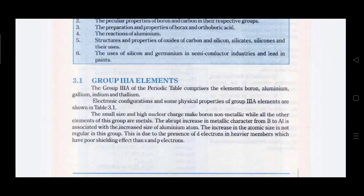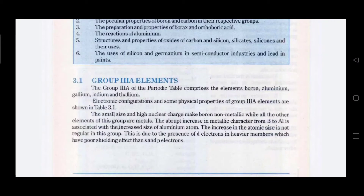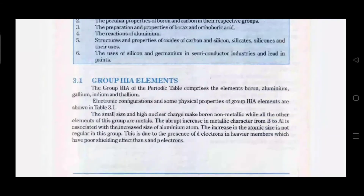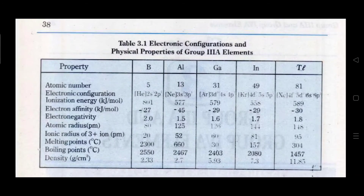Indium and thallium have d-orbitals. Due to the presence of these d-orbitals, size does not regularly vary and shows an abrupt increase in size, because d-orbitals are involved and the shielding effect decreases. This is Table 3.1 showing the physical properties and electronic configuration of Group 3A.